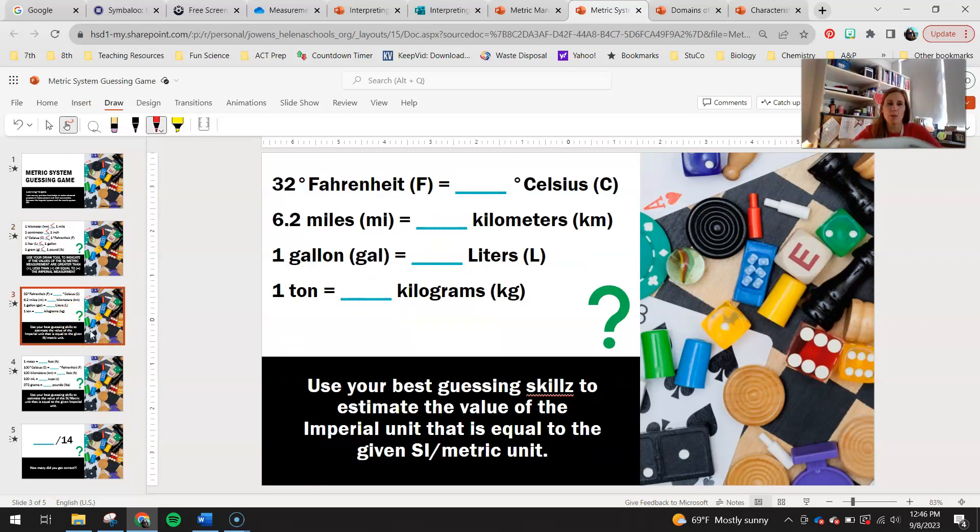For the next page, this is where you were actually guessing numbers. 32 degrees Fahrenheit is the temperature that water freezes. That's equal to 0 degrees Celsius. This is one reason we really like the metric system, because it's a lot easier to remember 0 degrees Celsius than it is to remember 32. If you go out and run 6.2 miles, you've ran 10 kilometers, or what people in cross-country might call a 10K. 1 gallon is equal to about 4 liters. 1 ton is equal to about 907 kilograms. Again, I don't expect you to be able to guess this dead on, but if you did, great job. About 2,000 pounds is about 907 kilograms. So you can kind of see the difference there.